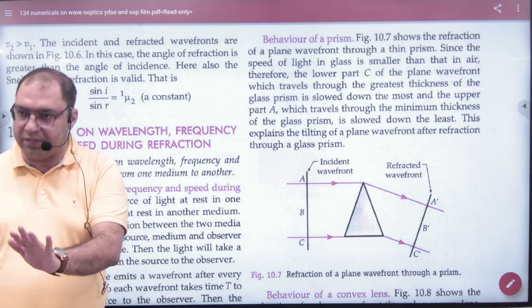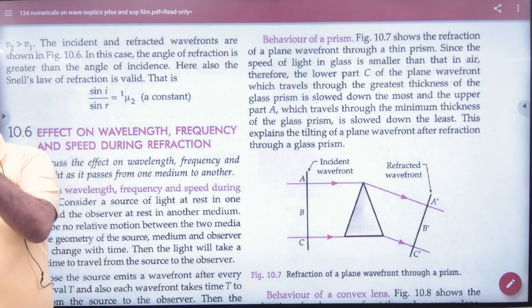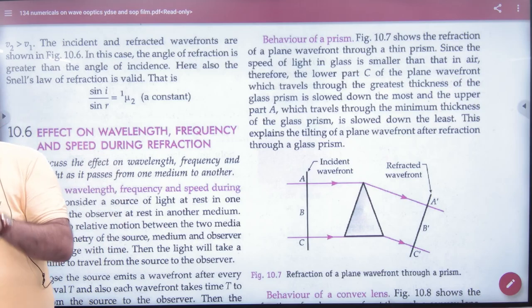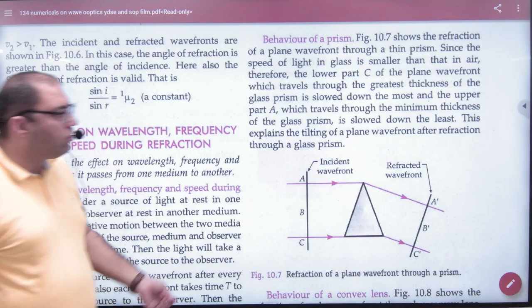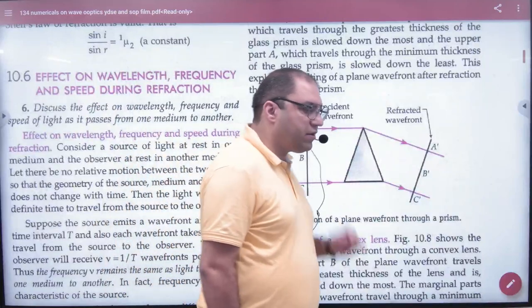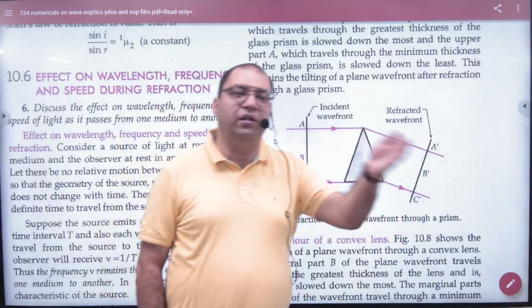On the Huygens Principle, there is a question that you have a plane wavefront. If you draw a diagram, if that wavefront passes into the prism, how will the wavefront look out?